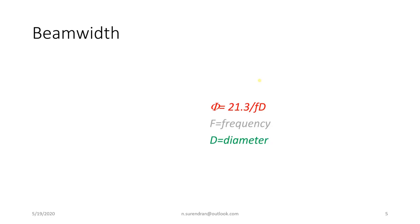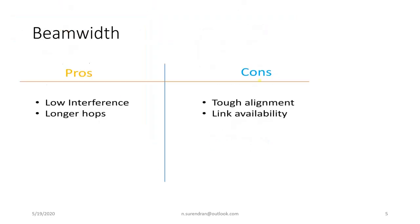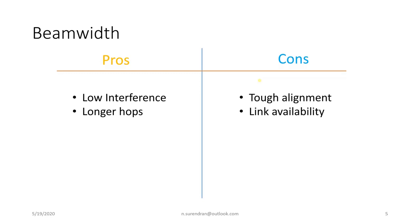The pros of having a narrow beam width are: low interference, longer hops, higher signal-to-noise ratio which allows increased modulation, and finally higher capacity. The disadvantages are tough alignment — since the beam width is very narrow, high skill is required to align the microwave link — and reduced link availability, because if the tower shakes due to high wind speed, the narrow beam easily goes out of alignment, affecting availability.